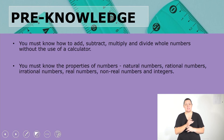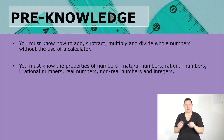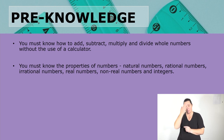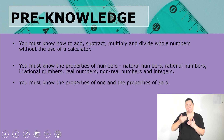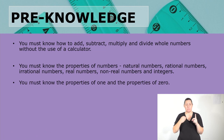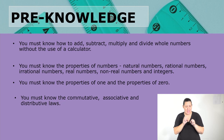Let's start with some pre-knowledge. You must be able to add, subtract, multiply and divide whole numbers without a calculator. You must also know the properties of numbers — natural numbers, rational numbers, irrational numbers, real numbers, non-real numbers and integers — as well as the properties of one and zero, and the commutative, associative and distributive laws.